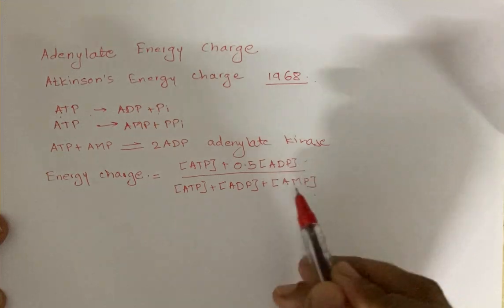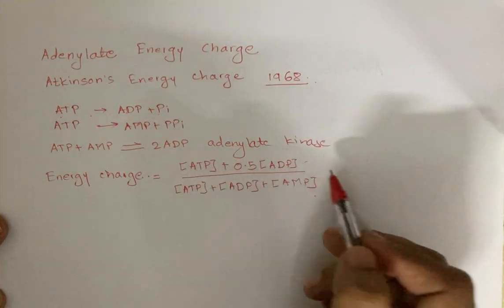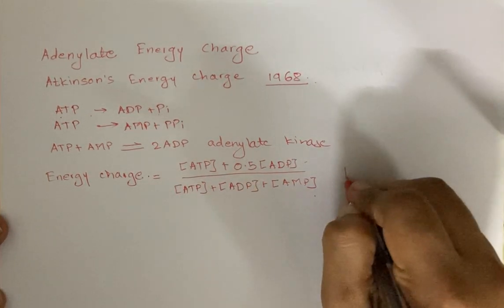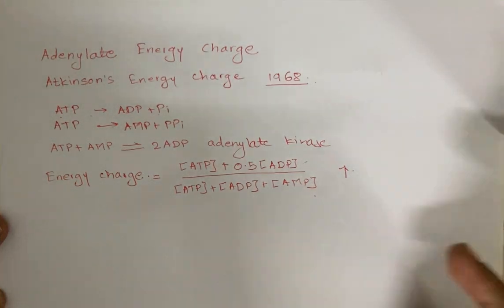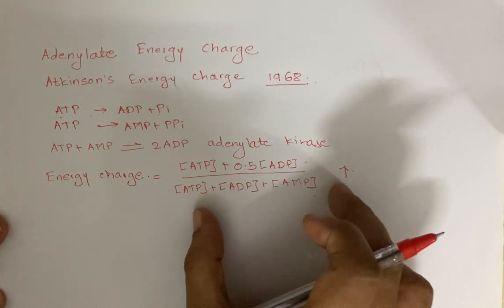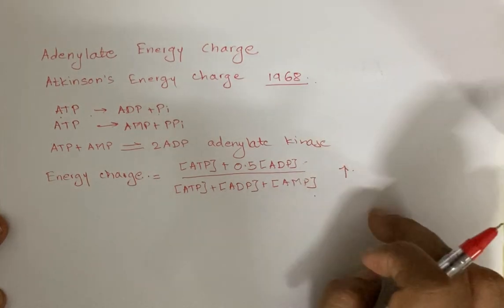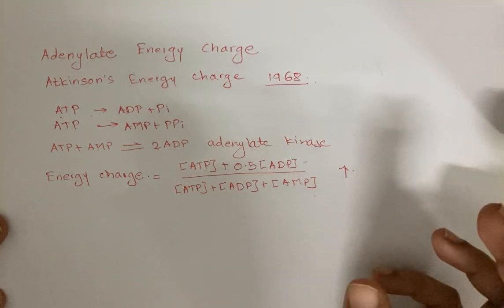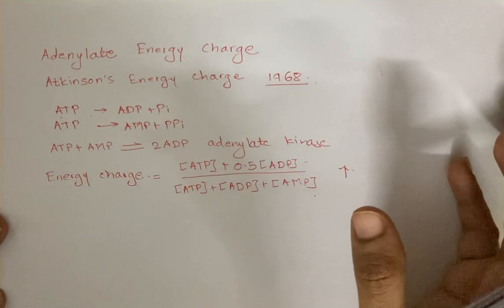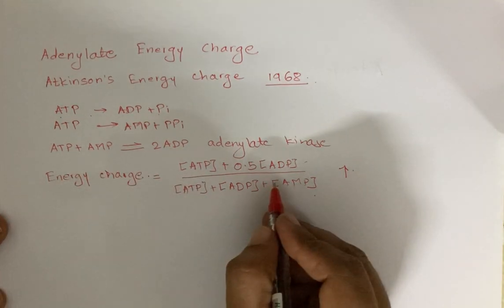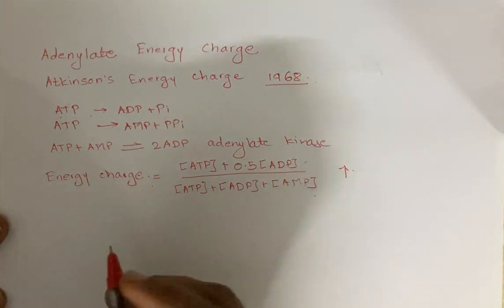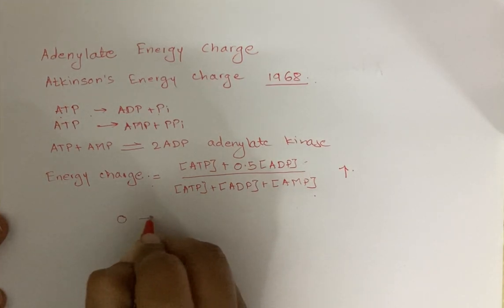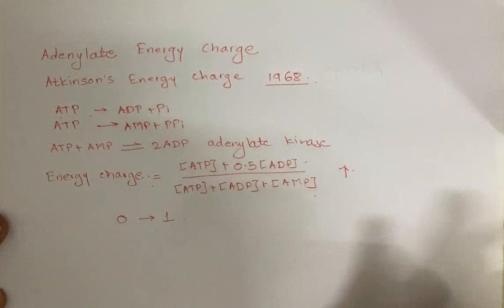If the energy charge is high, that means the cell has enough energy. If the energy charge is low, the cell needs to regenerate ATP. The value of energy charge can range from 0 to 1.